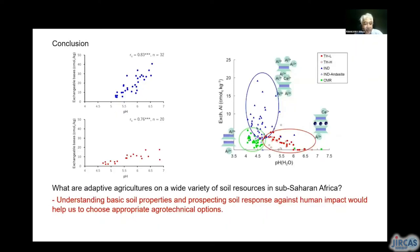This is the last slide. Soils in Sub-Saharan Africa are very variable. Understanding basic soil properties and prospecting soil resources against human impact would help us choose appropriate technical options. Finally, I'd like to emphasize that low-fertility soils in Sub-Saharan Africa should at least be separated into Oxisols and sandy soils, and different agricultural management is available to improve agricultural production. Thank you very much for your attention.